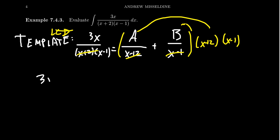So that'll look like 3x equals A(x-1) + B(x+2). You'll notice that the coefficient A is going to be partnered up with the factor that wasn't below it. So x+2 was below the A. Now it's going to be attached to an x-1.